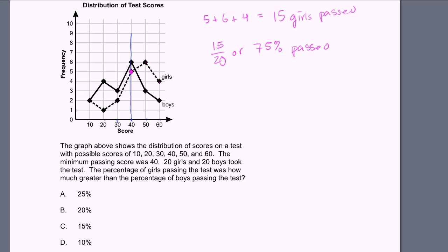Now let's do the boys. The boys have to get at least a 40 to pass. So 6 boys just barely passed with a 40. Then 3 boys got a 50, plus 2 boys got a 60. So a total of 6 plus 3 plus 2 is 11 boys passed. 11 out of 20 is 55% of the boys passed. So 75% is how much greater than 55%? Well, 75% minus 55%, that's 20%.